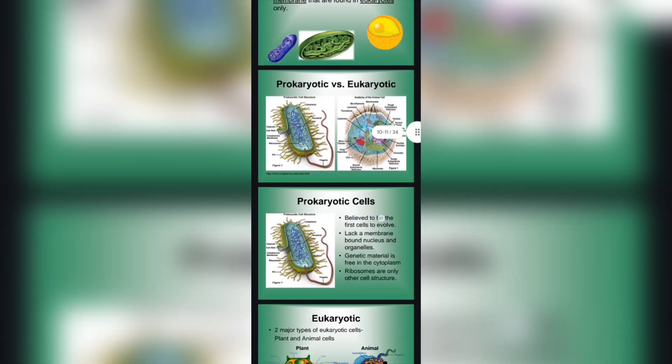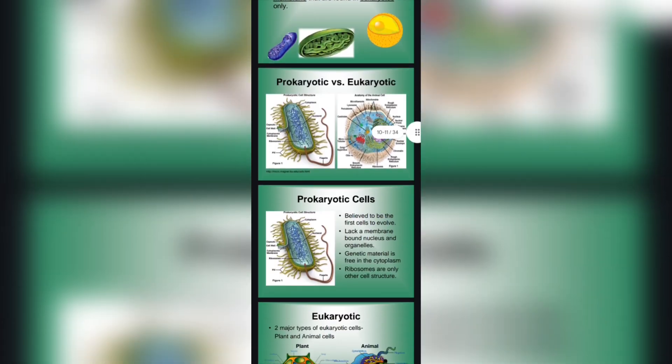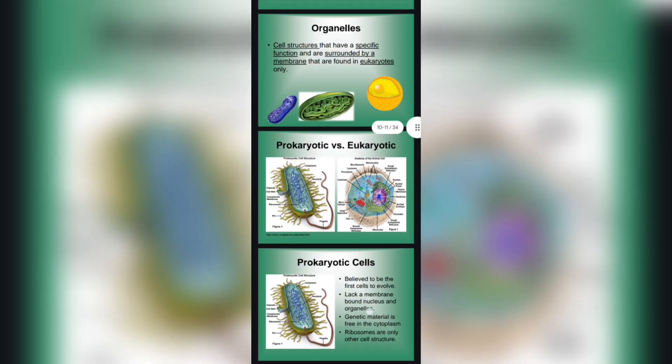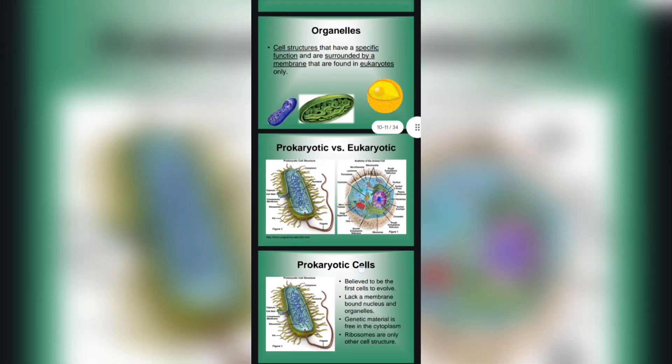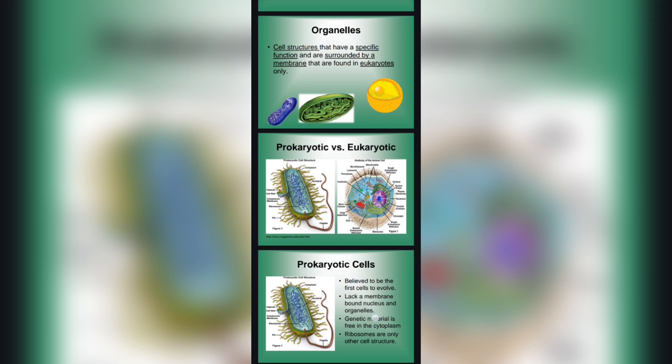Prokaryotic versus eukaryotic — their structure. As you can see, we have the prokaryotic and the anatomy of the animal cell.